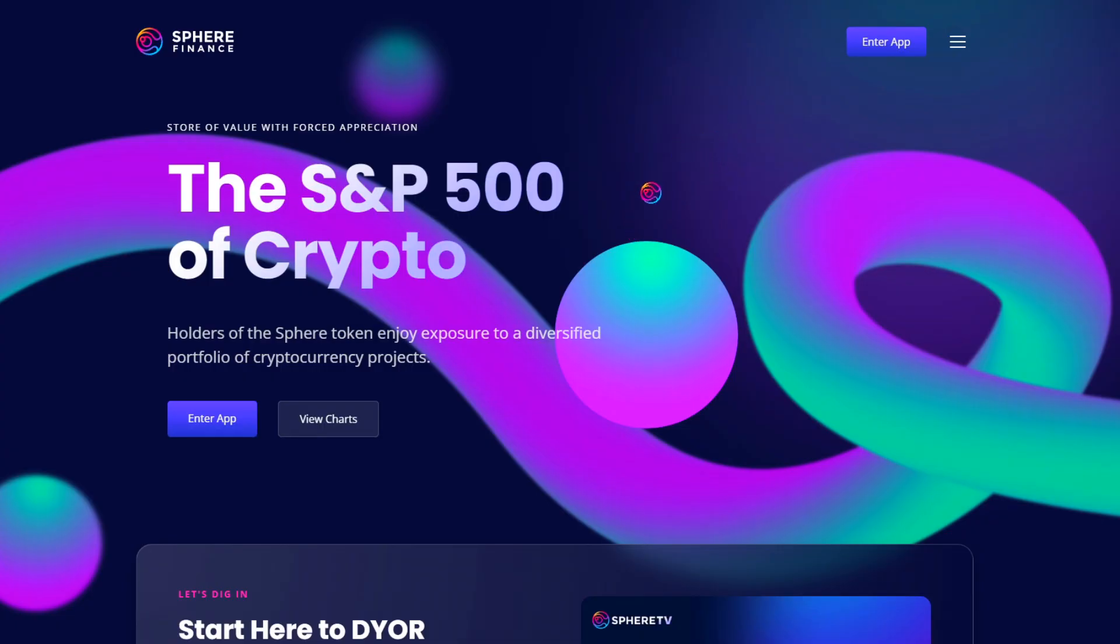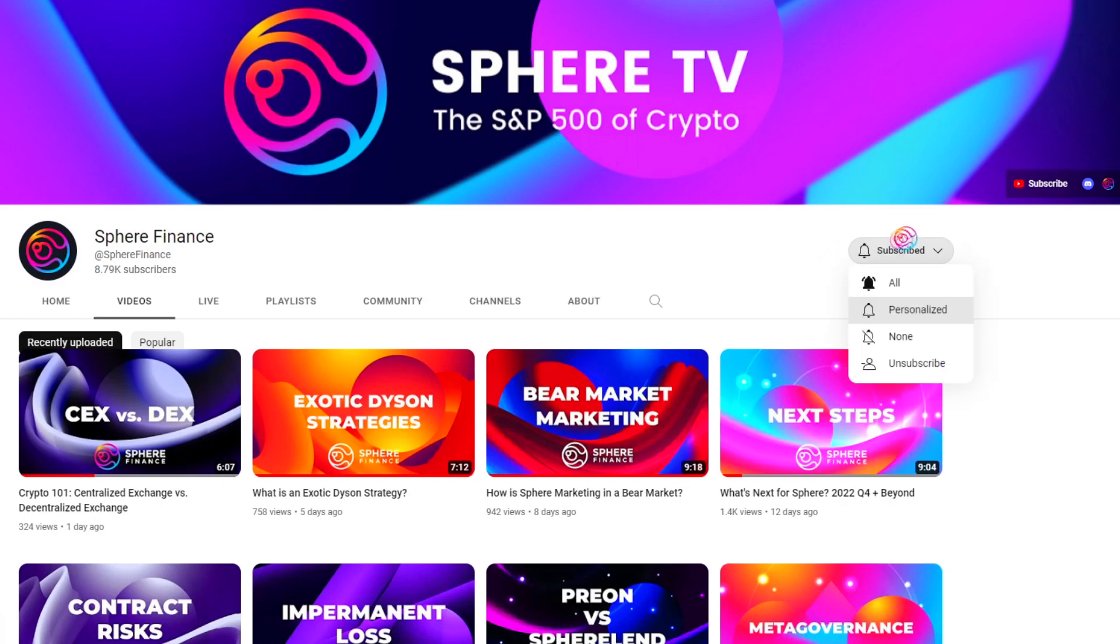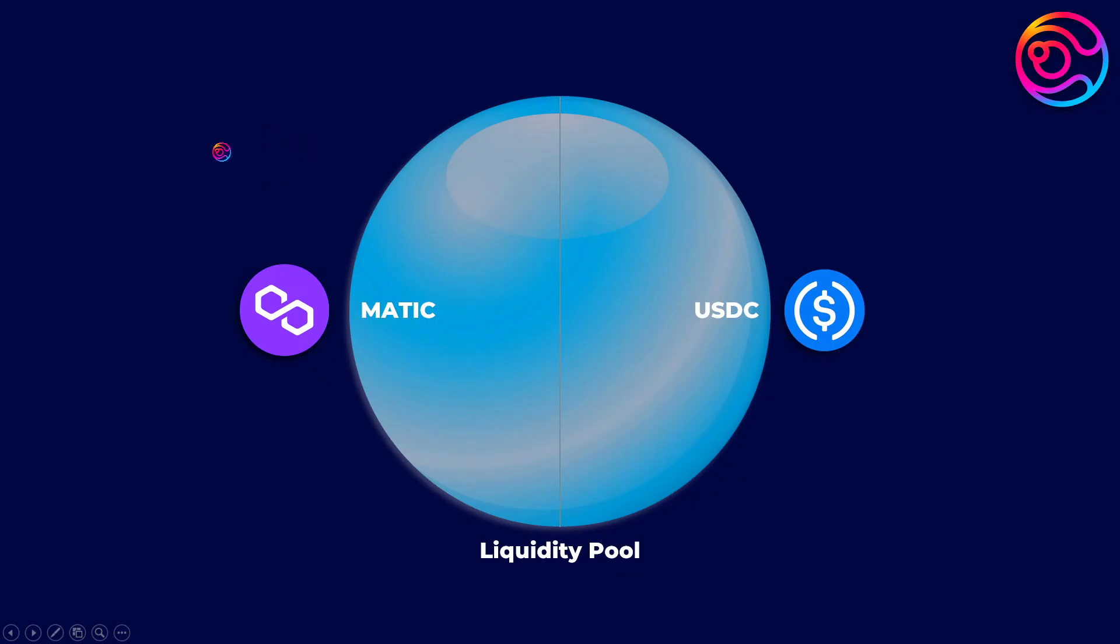Welcome to Sphere Finance. I am Pricetime and you're watching Sphere TV. In decentralized finance, users can trade cryptocurrency between one another using what is known as a liquidity pool, and anyone with crypto assets can supply liquidity to these liquidity pools.